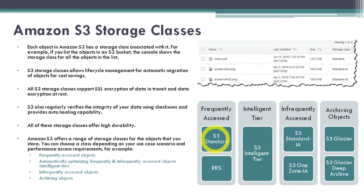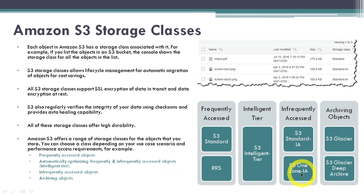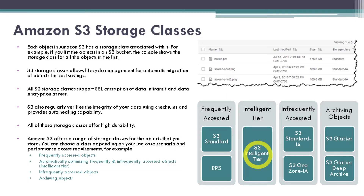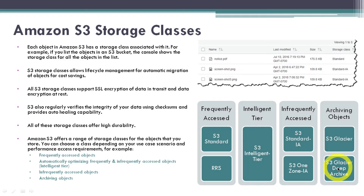If your data is less frequently accessed, you can use the infrequently accessed tier. In this tier there are two types of storage classes: S3 Standard-IA and S3 One Zone-IA. You can choose among these for your infrequently accessed data. If your access pattern is unpredictable or you are unsure, you can select the intelligent tier, which is smart enough to select the best storage class for your objects. For archiving purposes there are two types: S3 Glacier and S3 Deep Archive. As per your use case and access pattern you can select any of these storage classes.